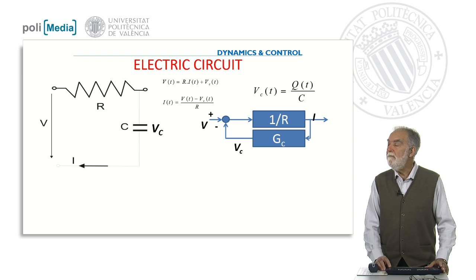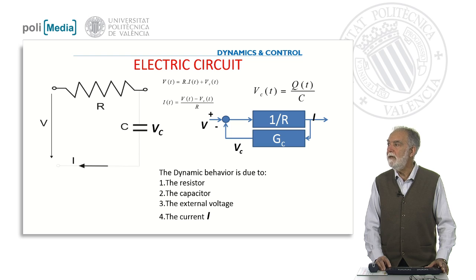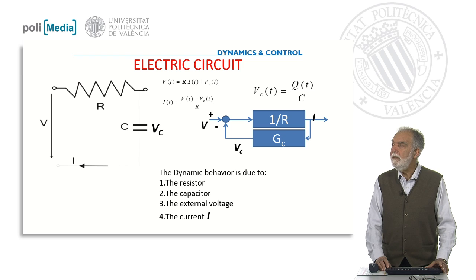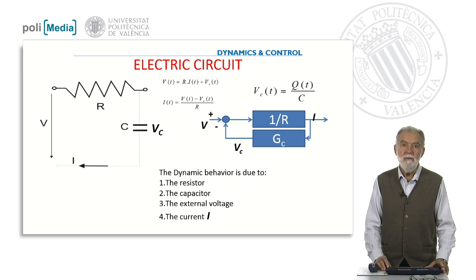The voltage in the capacitor is proportional to the charge accumulated divided by the capacitance of the capacitor. So the question now is, the dynamic behavior of this circuit is due to the resistor, the capacitor, the external voltage, or the current?